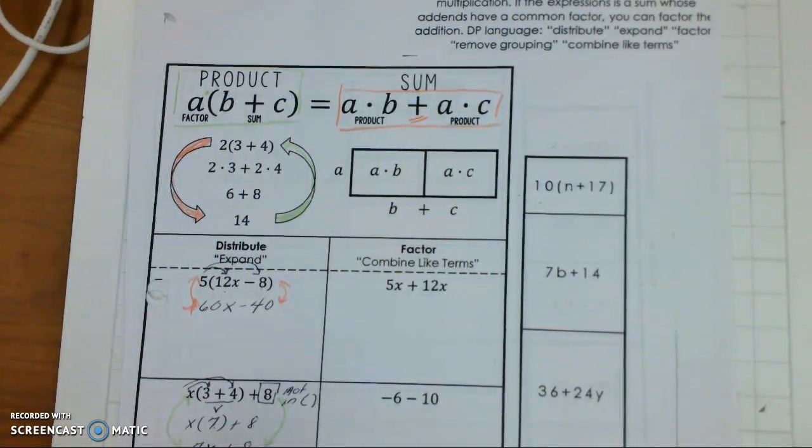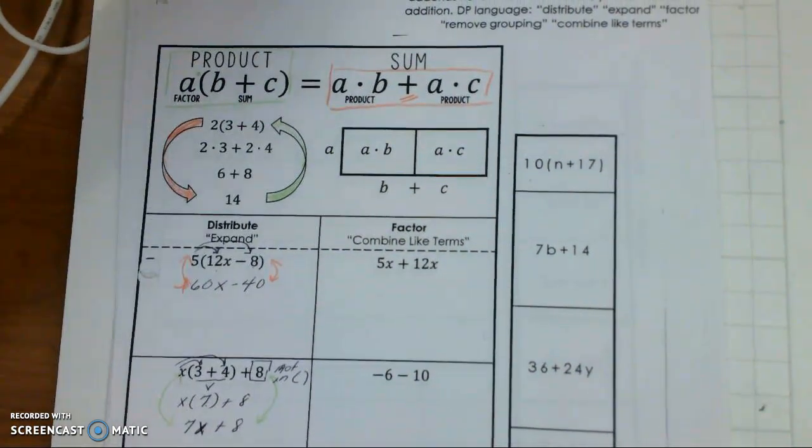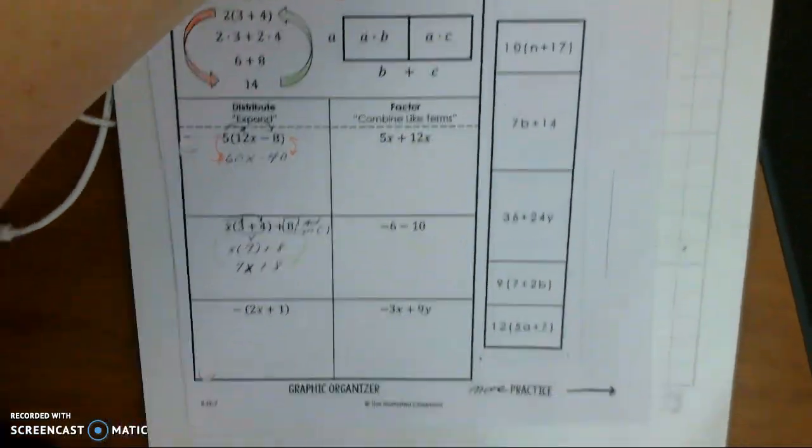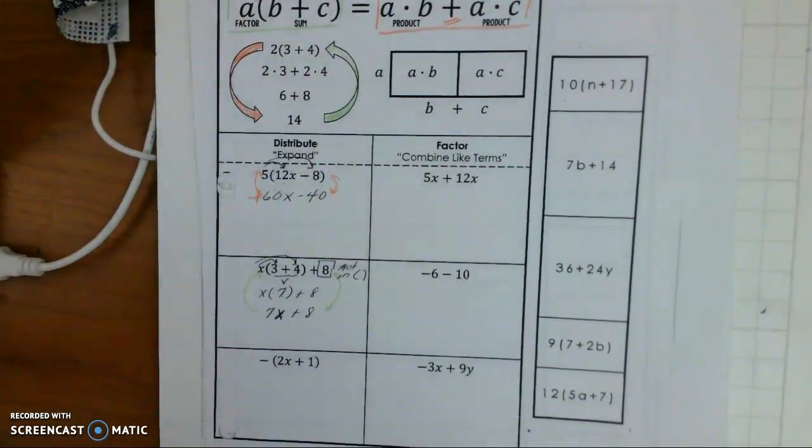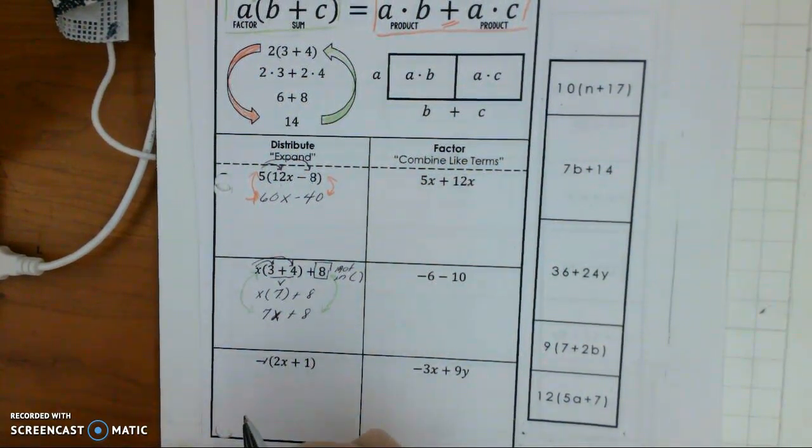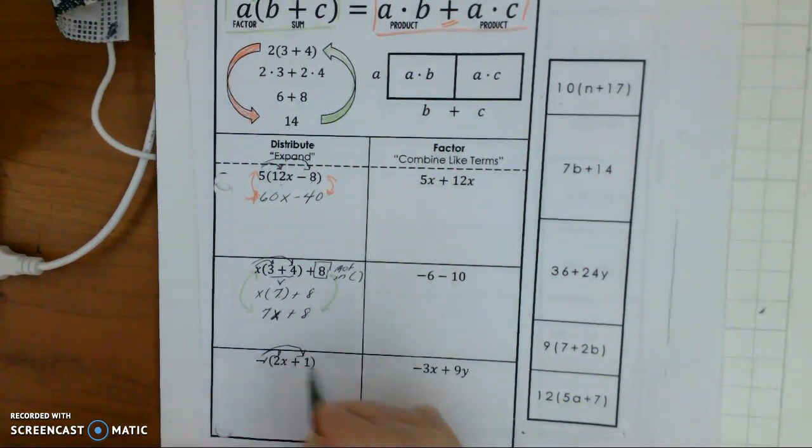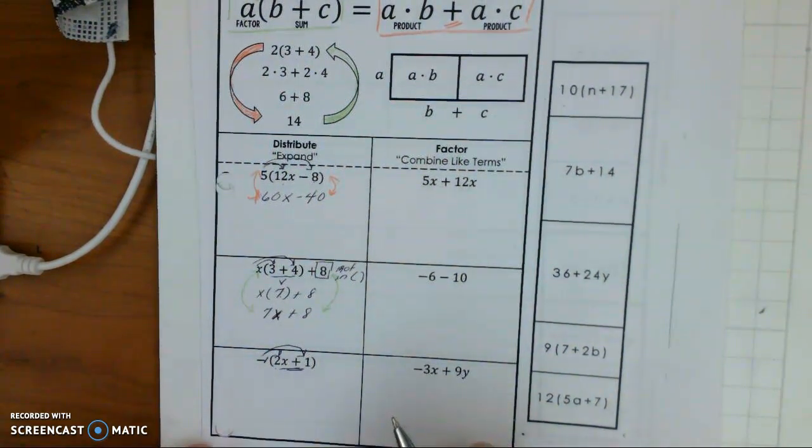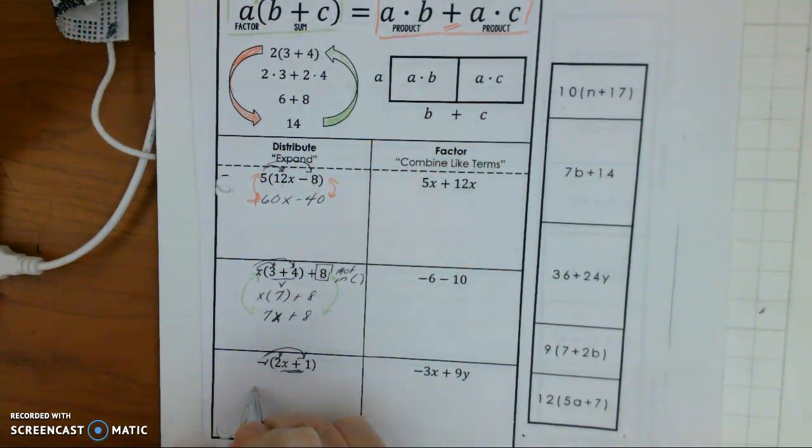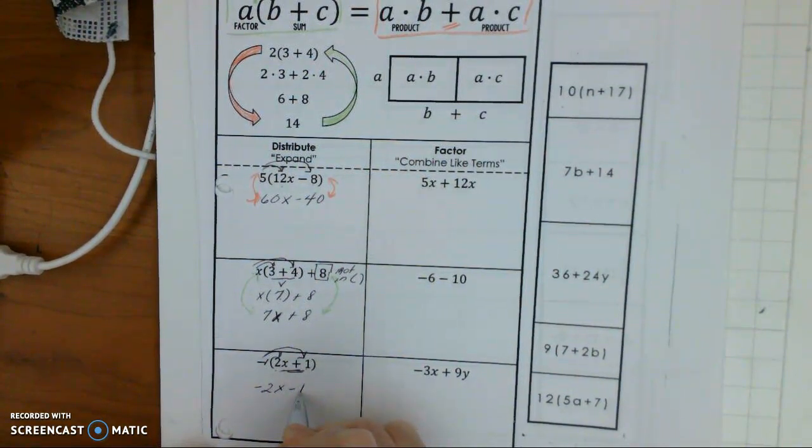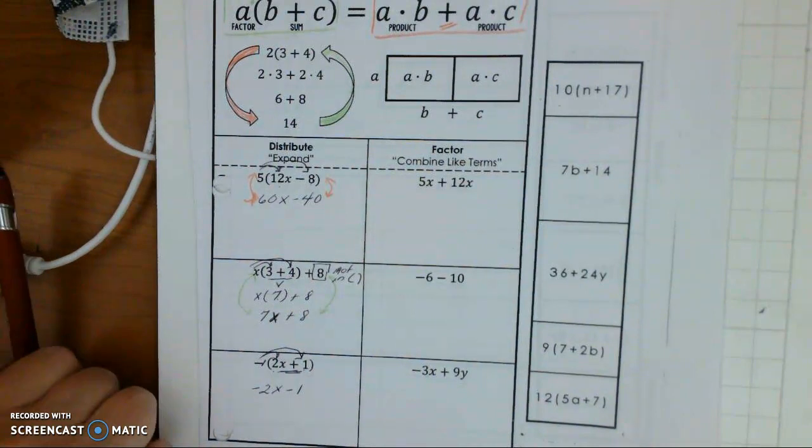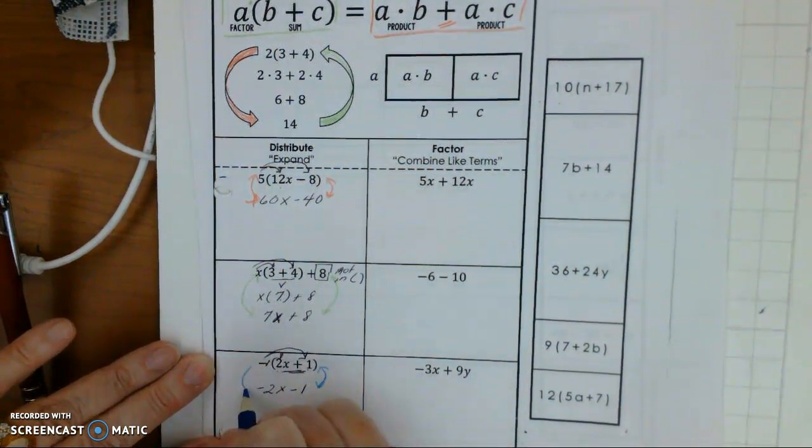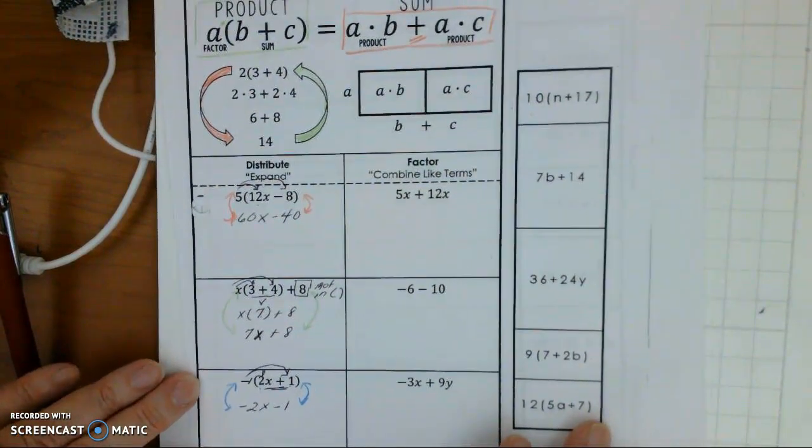Now the next one, whenever you see just a minus sign, let me bring this up so you can see it. Okay, there we go. Thanks for your patience. This will be a 1. You always put a 1 there. So it's 1 times 2x and 1 times plus 1. So we are going to go negative 1 times 2x because we can't combine these because they are not like terms. So negative 1 times 2x is negative 2x. And negative 1 times positive 1 is negative 1. So again, these are equivalent expressions. They mean the same, they equal the same thing. That's what equivalent means.